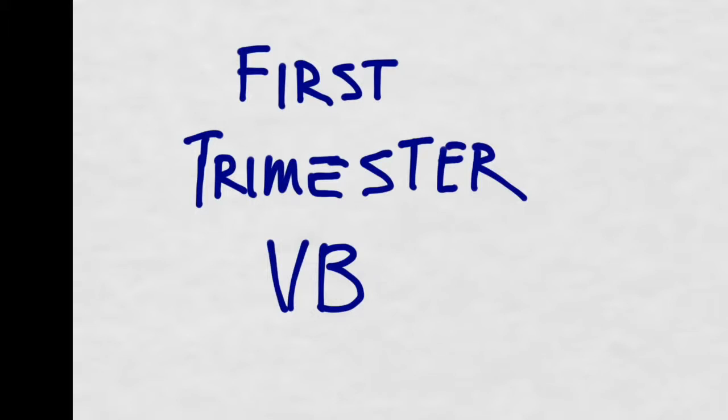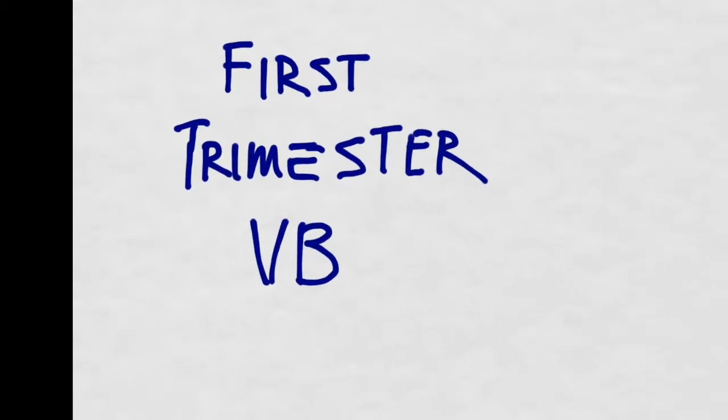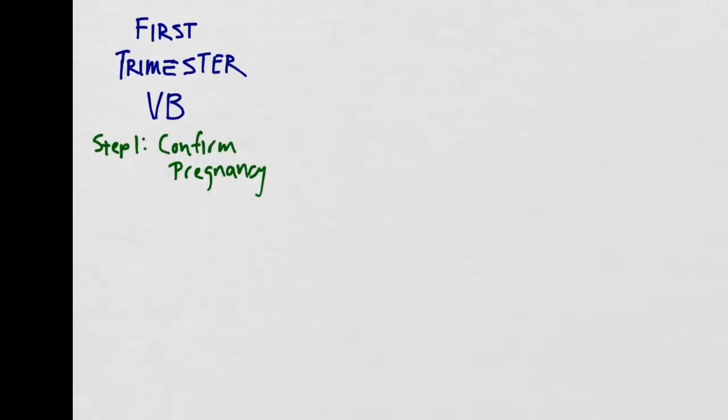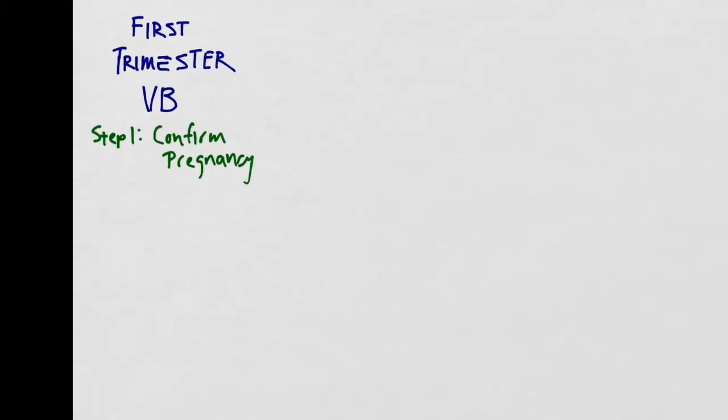Today we're going to talk about the patient who presents with a first trimester vaginal bleed chief complaint. This is a relatively common chief complaint seen in the emergency department, so having an algorithmic approach will allow you to see these patients efficiently. The first step in evaluating these patients is to confirm that they are in fact pregnant, which can be done via a quick bedside urine pregnancy test. There's no real point in going down this algorithm if your patient is not even pregnant.